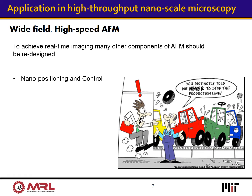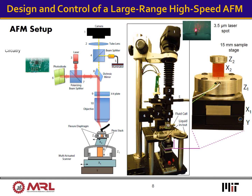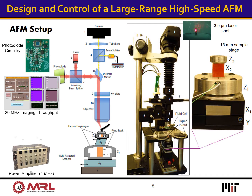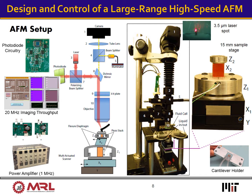As discussed earlier, one important application of precision positioning is in microscopy. However, nanoscale microscopy instruments operate similar to production lines where a single slow component slows down the whole process. To benefit from the speed performance of our nanopositioner in atomic force microscopy, all other components of the AFM — including optics, electronics, actuator drives, and even data logging and visualization — need to be redesigned. Here you can see our fully custom atomic force microscope with all associated components designed for high-throughput performance. This instrument is used in various real-time chemical, electrochemical, and biological studies.